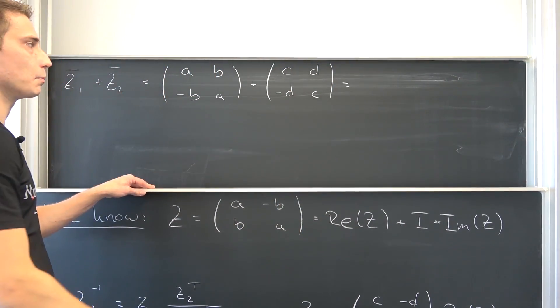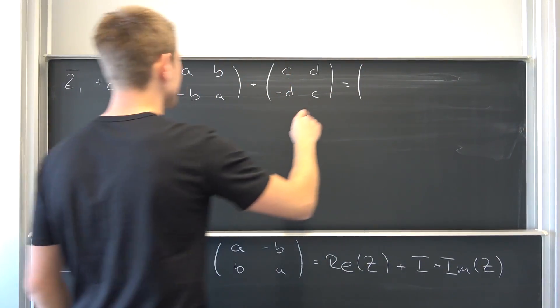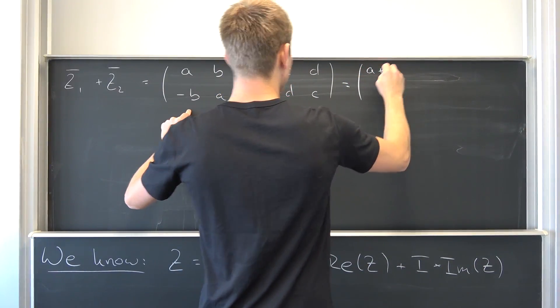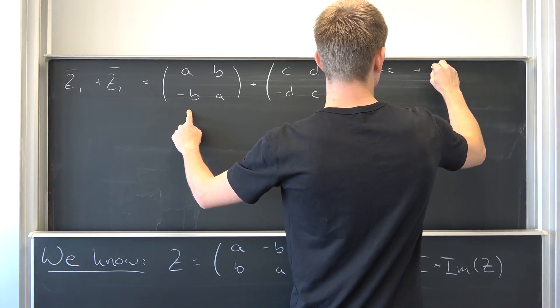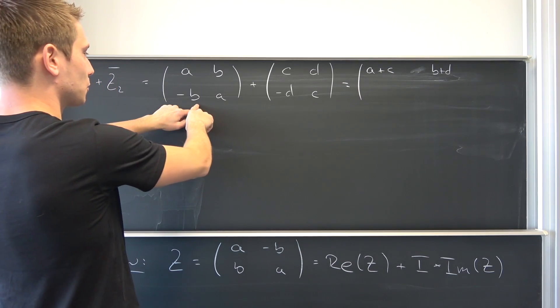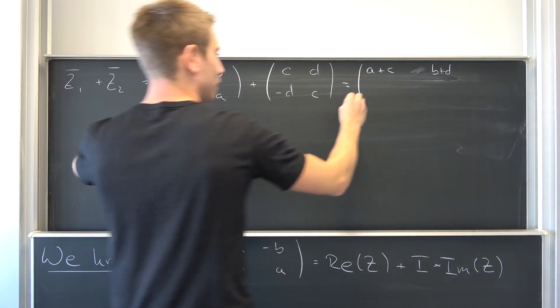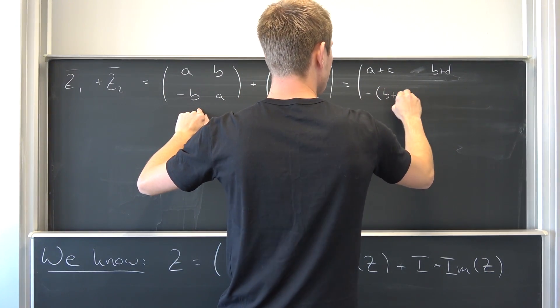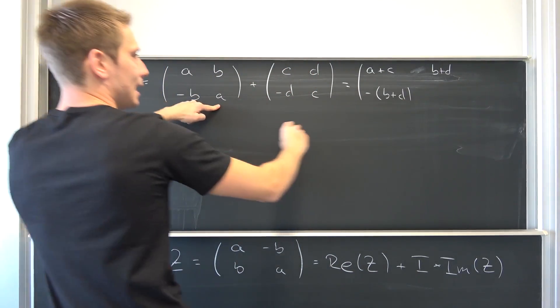Overall, it's defined point wise. Matrix addition leaving us with a plus c and then plus b plus d, and then we are going to have the negative sign, we are going to factor it out, an important part, negative b plus d and then a plus c.